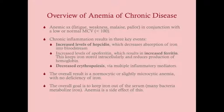Second, there are increased levels of apoferritin. Apoferritin is the precursor to ferritin, which holds iron in the cells, keeping it away from hemoglobin production. With increased ferritin hoarding iron, you get decreased production of heme. Remember, heme is protoporphyrin 9 plus iron, and heme combines with globin to become hemoglobin.